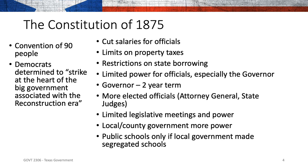In 1875, there was a constitutional convention of about 90 people, and Texas enacted the Constitution of 1875 — the constitution we have had ever since. We had quite a few turnovers at the beginning, but we have not had a new constitution since 1875. There have been lots of amendments, but the constitution of 1875 was enacted by Democrats. Texas was previously a pro-Democratic state.